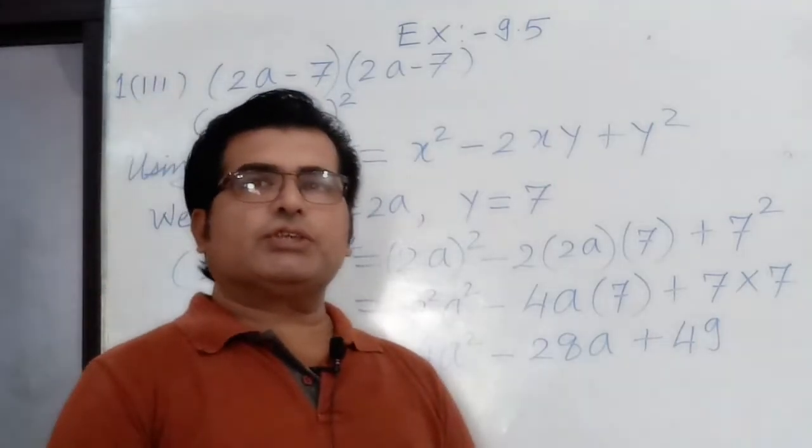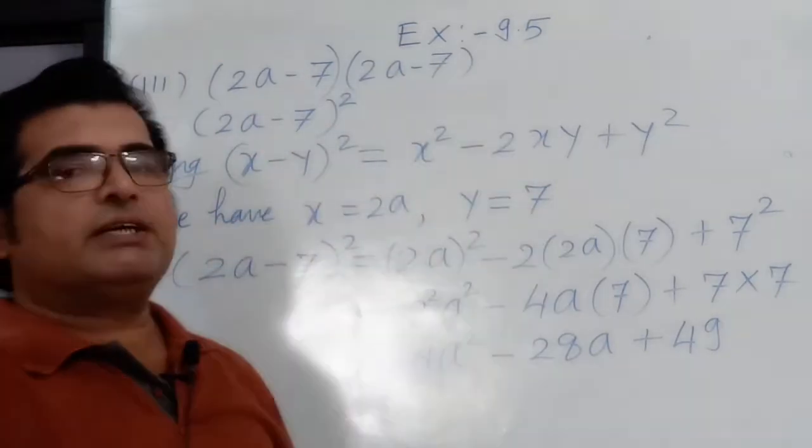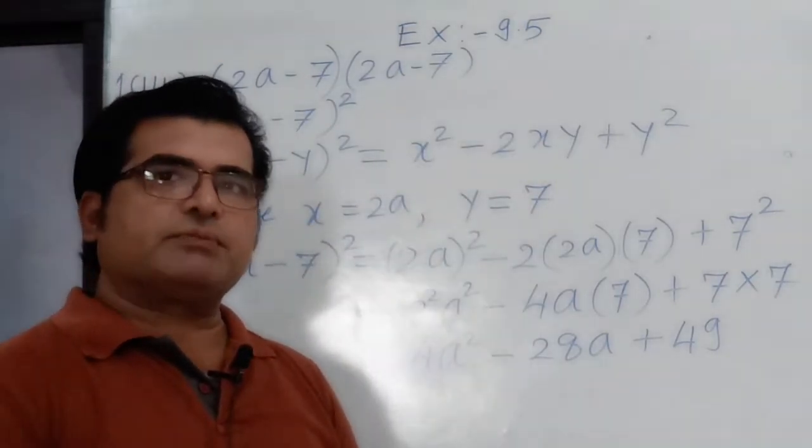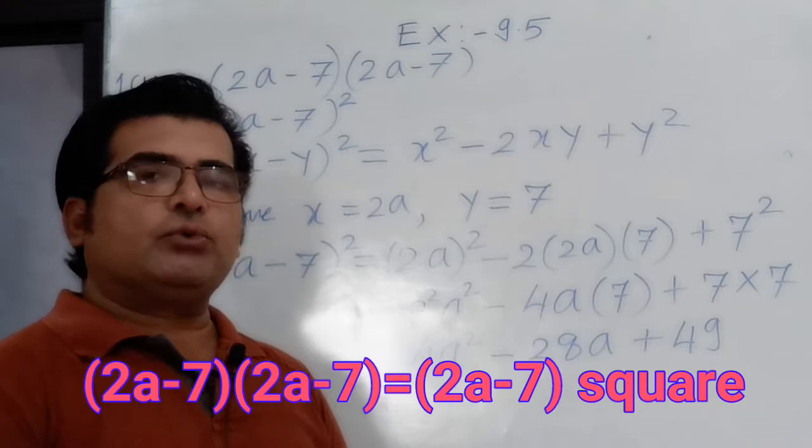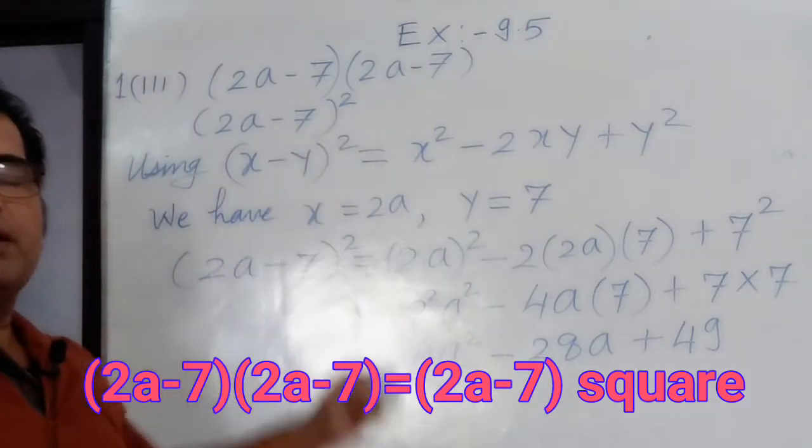Now the question is: use the suitable identity to get the product of (2a - 7) into (2a - 7). So first we write (2a - 7) into (2a - 7) as (2a - 7) the whole square.